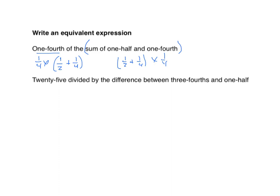The next one is a little interesting because we have division: twenty-five divided by something. That's going to be our whole — our dividend — that's the first part of our expression. We cannot change the order. So twenty-five divided by the difference between three-fourths and one-half. Difference tells us to subtract. Note that it doesn't tell us we have to solve this problem — these are just examples you'll see on your homework and test as well.